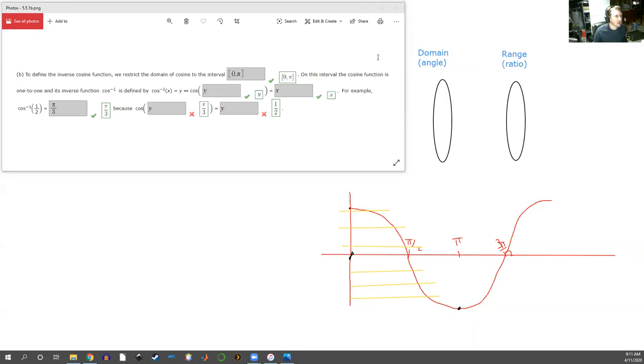Cosine—let me write it in the way they wrote it this time. Cosine takes an angle, I'll call it y although that seems odd, and it sends it to a ratio x.